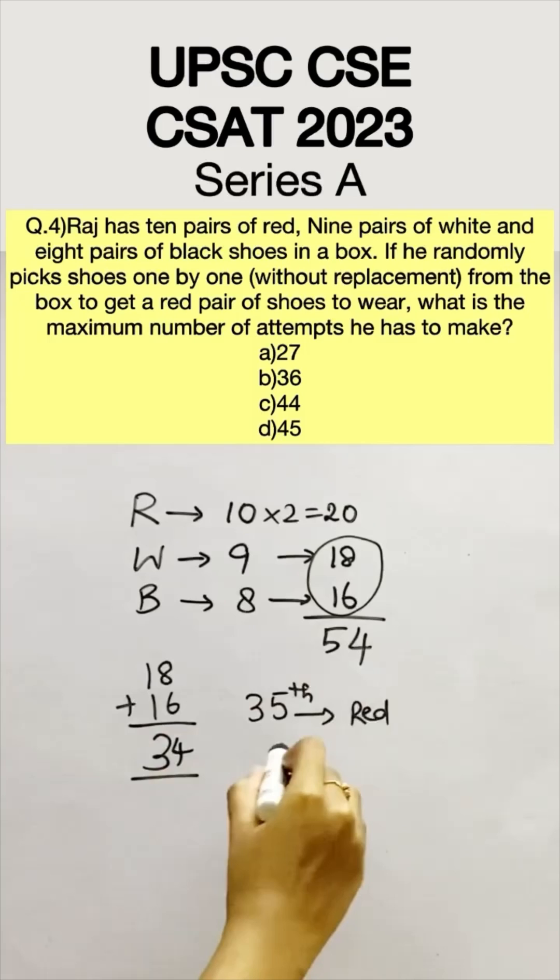This means we have to assume that we were unlucky enough to pick the right shoes first, exhaust them and then pick the left shoe. Or we picked the left shoes first, exhausted them and then the right shoe.